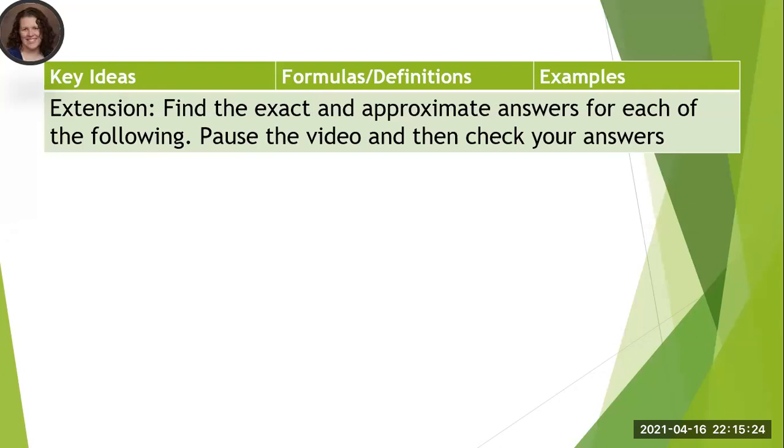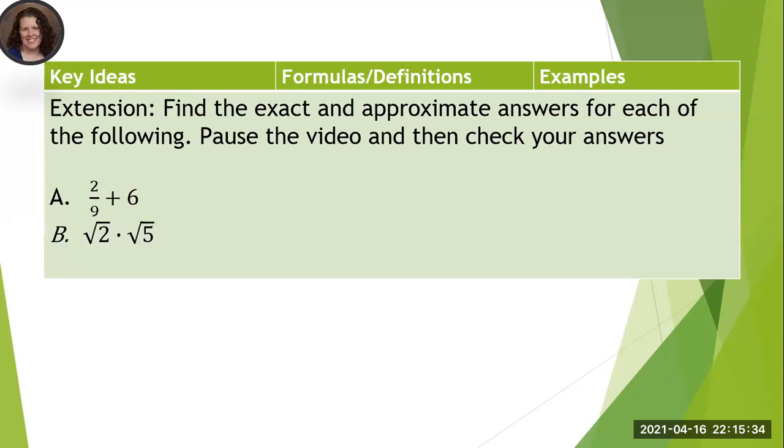The last thing I'm going to give you is an extension. I'm going to give you some problems to try on your own for you to pause the video and then start it again when you have your answers. So what is the exact and the approximate answer of two ninths plus six and the square root of two times the square root of five? Go ahead and pause, and once you have your answers, resume the video.